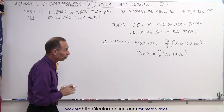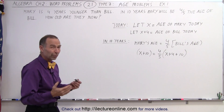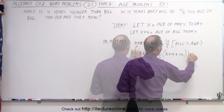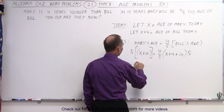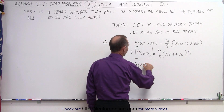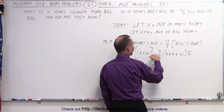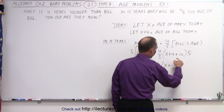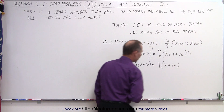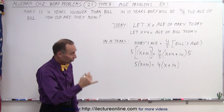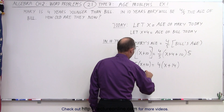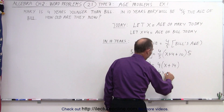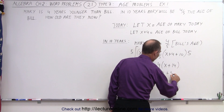Now we're ready to solve this equation for x. The first thing we want to do is get rid of the fraction, so we'll multiply both sides by 5. On the left side we get 5 times (x plus 10), and on the right side the 5 cancels, leaving 4 times (x plus 14), since 4 plus 10 is 14.